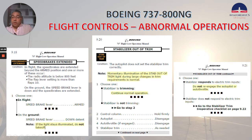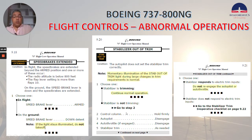Speed brakes extended non-normal checklist: choose one — in flight, speed brake lever armed; on the ground, speed brake lever down detent. If the light stays illuminated, do not take off. Stabilizer out of trim: note that momentary illumination of the stabilizer out-of-trim light during large changes in trim requirements is normal. Choose one: if the stabilizer is trimming, continue normal operation. If the stabilizer is not trimming, go to step two and follow those steps. In step six, choose one: if the stabilizer responds to electric trim inputs, do not re-engage the autopilot or autothrottle. If the stabilizer does not respond to electric trim inputs, go to the stabilizer trim inoperative checklist in the QRH.